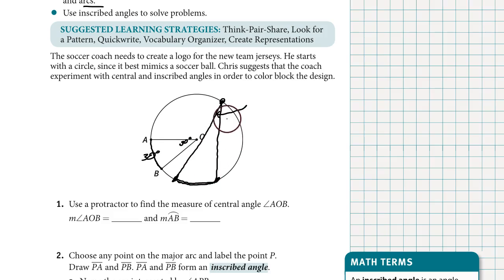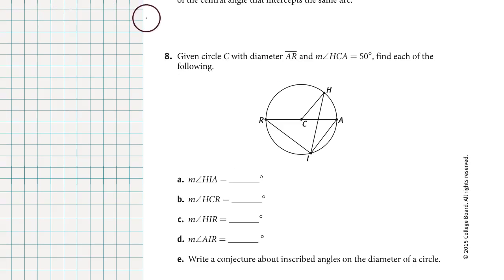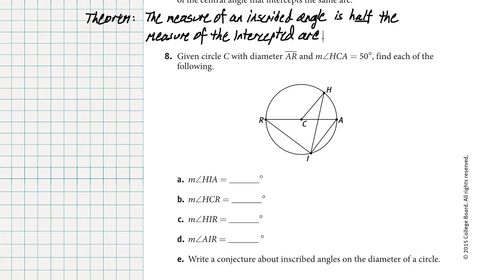The relationship between an inscribed angle and its arc is that the inscribed angle is half of the measure of the arc. For example, if this arc was 40 degrees, the inscribed angle is only 20 degrees. The theorem is: the measure of an inscribed angle is half the measure of the intercepted arc. Don't confuse an inscribed angle, whose vertex is on the circle, with a central angle, whose vertex is at the center. The inscribed angle is half of its intercepted arc, but a central angle is congruent to its intercepted arc.